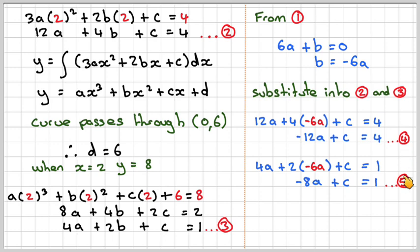If we do equation 4 take away equation 5, that eliminates c. Minus 12 minus minus 8 gives minus 4a. The c's disappear. 4 take away 1 is 3. That gives a equals minus 3/4.